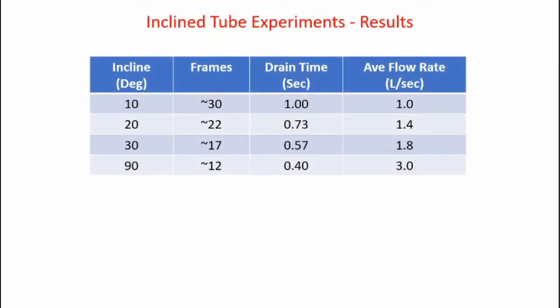Here's the tabulated test results. For an incline of 10 degrees, it took 30 frames of video for the pipe to drain. The video was at 30 frames per second, so the drain time was 1.0 seconds, giving an average flow rate of 1.0 liters per second. The 20 degree incline had a flow rate of 1.4 liters per second. The 30 degree incline had 1.8 liters per second. And 90 degree vertical incline gave 3.0 liters per second.